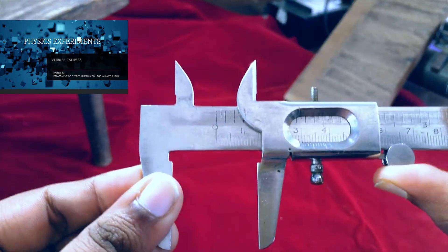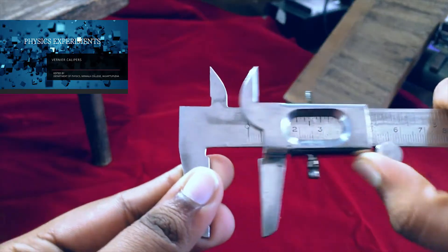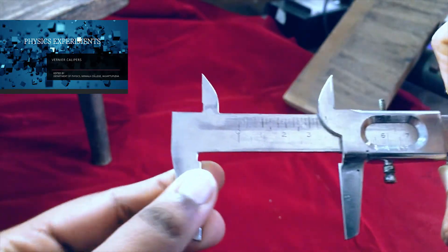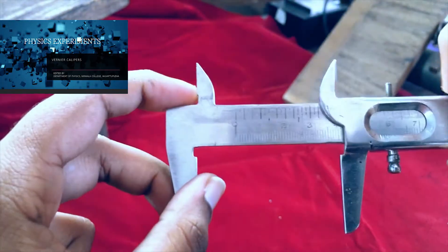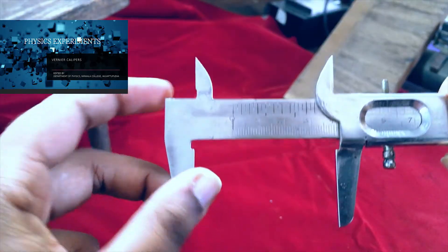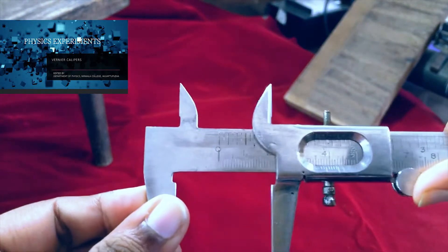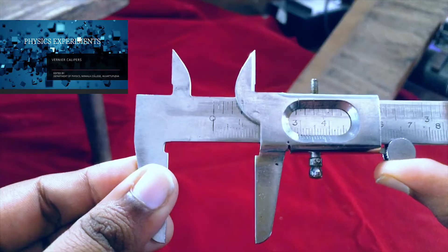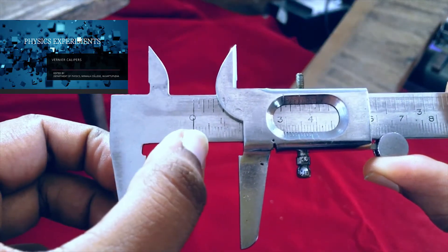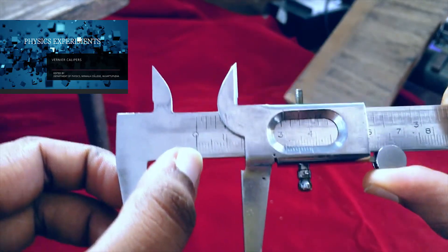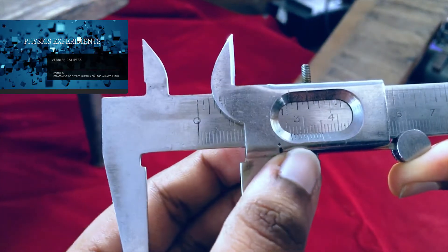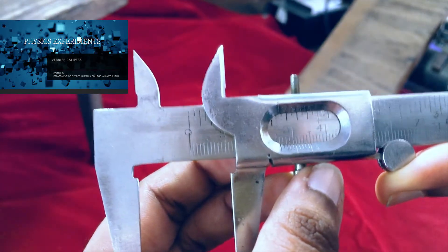This is Vernier Calipers. This is movable, this is Vernier Scale. The fixed part is Main Scale. First, value of one main scale division. One main scale division is 1 mm. Number of divisions on Vernier Scale - this is Vernier Scale, 0 to 10, there are 10 divisions.